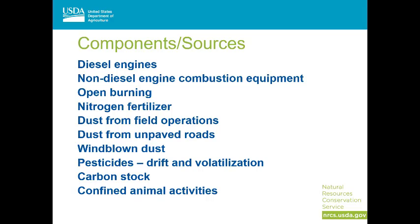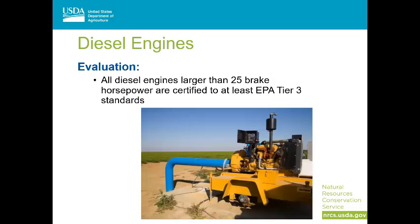In the next few slides, I'm going to be describing how we currently evaluate each of these sources in our conservation planning process. There are many applications of diesel engines in agriculture, including tractors, irrigation pumps, and emergency generators, and emissions from these diesel engines can impact the particulate matter, ozone precursors, and airborne reactive nitrogen resource concerns. We wanted an assessment that is simple yet addresses the majority of emissions that could be produced from diesel engines. So we set our threshold to be that all large diesel engines — those larger than 25 brake horsepower — have to be certified to at least Tier 3 standards as set by the U.S. Environmental Protection Agency. Tier standards are related to the manufacture date and horsepower of the engines, so it's relatively easy to make an inventory of the diesel engines at an operation and see where things stand. If a producer agrees to address this resource concern component, they would either replace, repower, or retrofit any higher emitting engines.